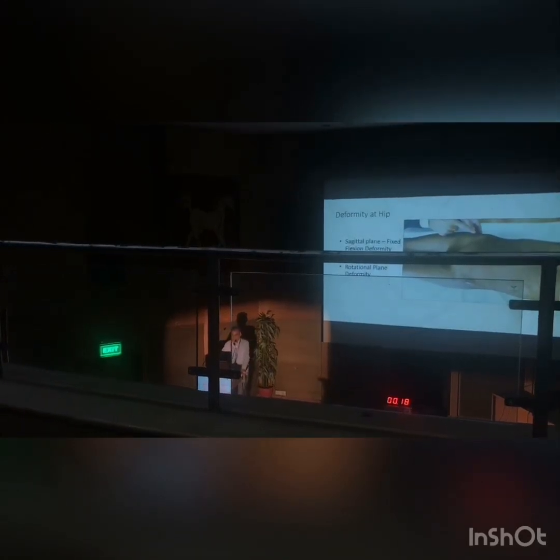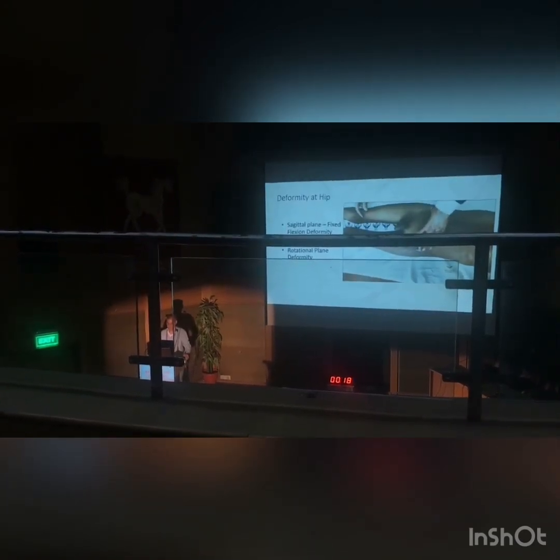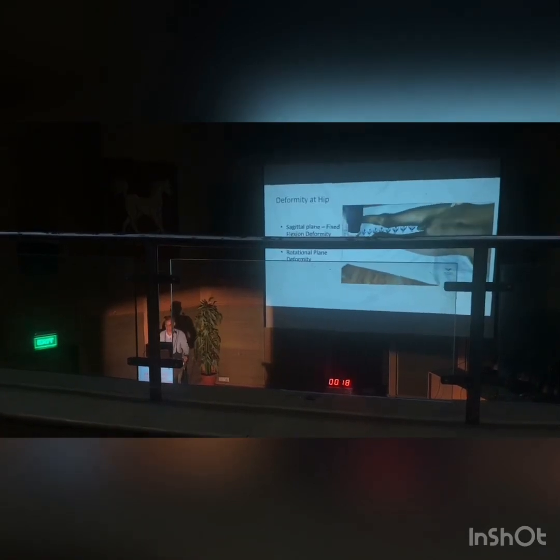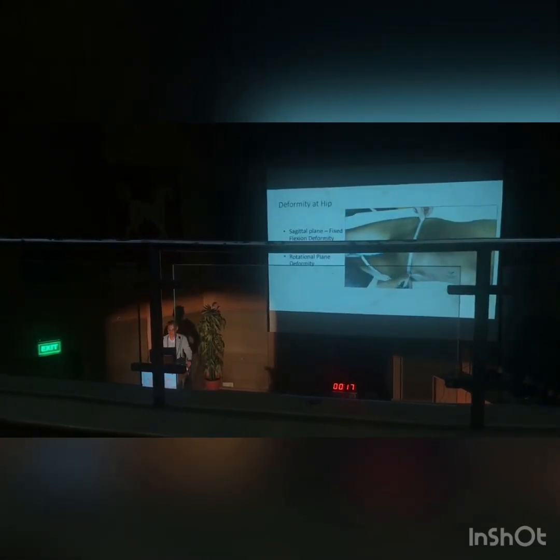Then we move on to the next heading of examination — deformity. Deformities can be present in the sagittal plane as fixed flexion deformities, or in the coronal plane and rotational plane. Looking at the anterior superior iliac spines — the left side is the affected one, you can see a healed scar there — the ASIS was at a lower level, meaning there was an abduction deformity. I am trying to square the pelvis using Perkins' method, making the two ASIS level, and thereby revealing the abduction deformity on this side.